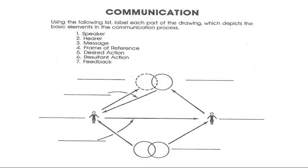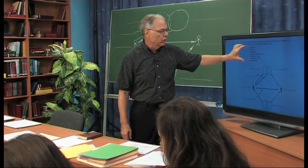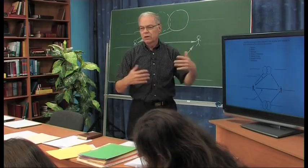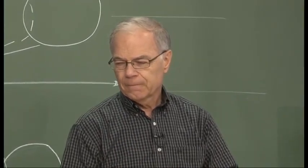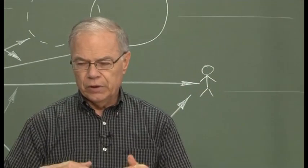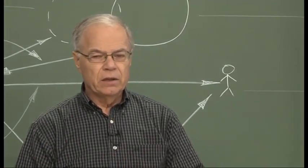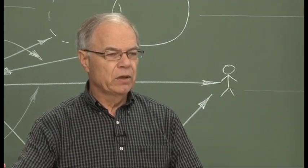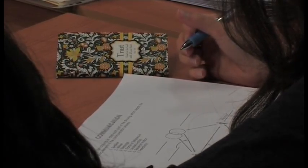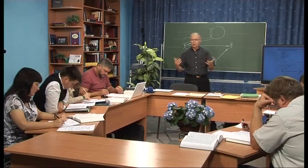What I want you to do is write in each space the word that you think fits. Each space will have one word, and you'll use each of these seven items only one time — no duplication, no leaving one blank. I'll give you a few minutes. When you think you've finished, talk to your neighbor, compare your answers, and see if you agree. If not, explain why you wrote what you wrote, and see if you can come to some agreement.